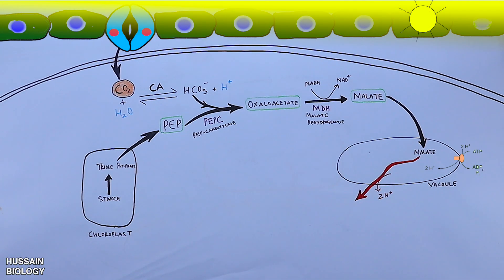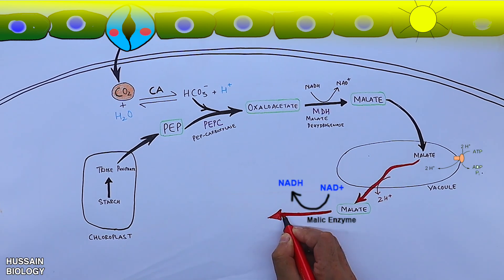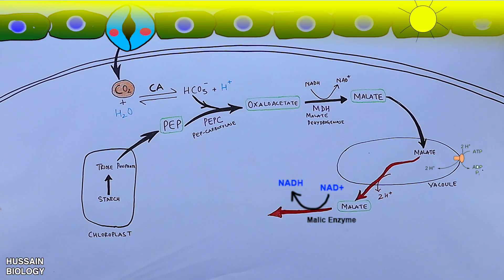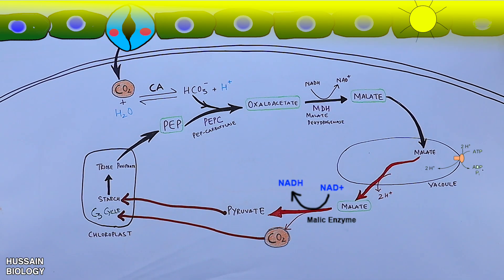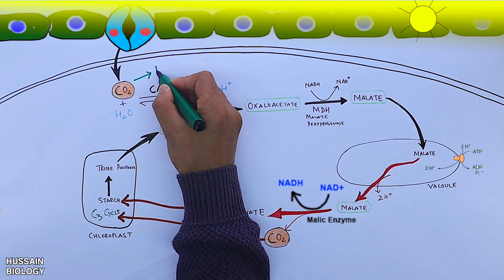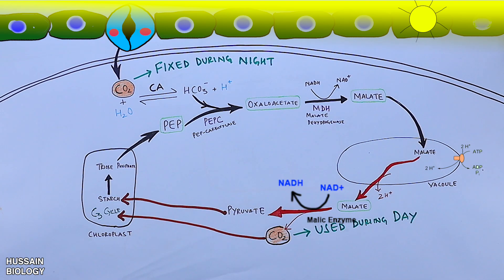During the daytime, malate is exported out of the vacuole and acted upon by malic enzyme. NAD⁺, acting as an oxidizing agent, oxidizes malate to pyruvate and carbon dioxide, as shown in the diagram. The pyruvate then enters the chloroplast and gets converted into starch, while the CO2 also enters the chloroplast where it drives the C3 or Calvin cycle. So CO2 is fixed during the nighttime and used during the daytime — this is the key difference between C4 plants and succulent CAM plants.